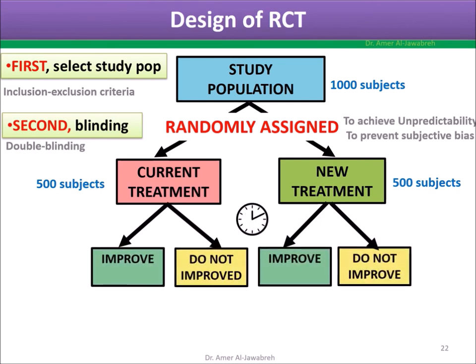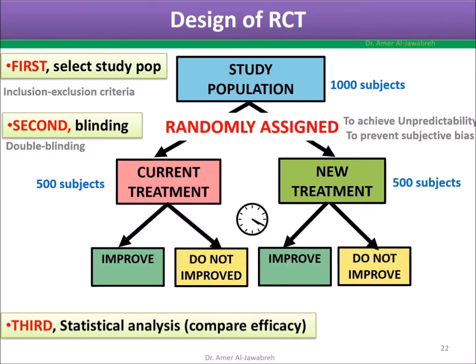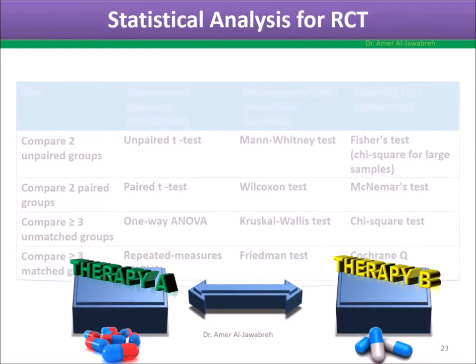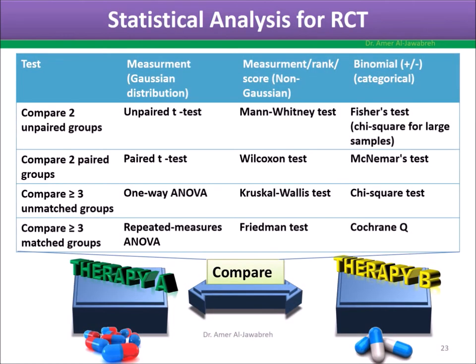Then follow your study groups for improvement and non-improvement. Third, use T-test or ANOVA to compare efficacy of treatment. The list of statistical analyses for RCT is based on the type of data and number of groups.